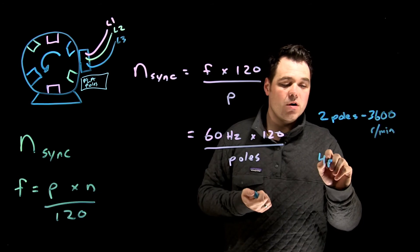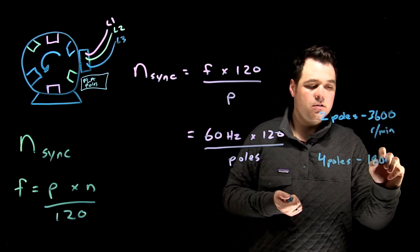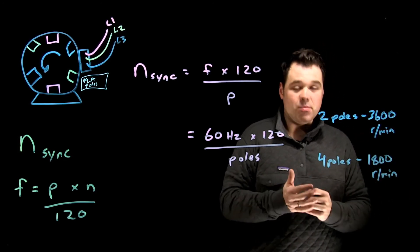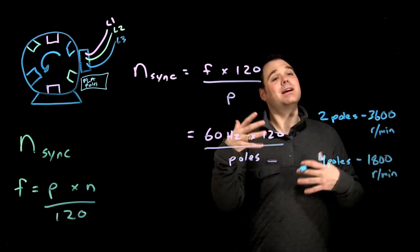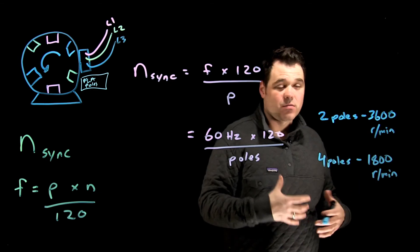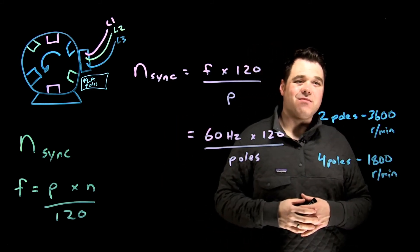A four pole motor, which is pretty common, would give us 1800 revolutions per minute. A six pole motor would be 1200, an eight pole motor 900, a 10 pole motor 720, a 12 pole motor 600. So it keeps going down like that, but the whole time I'm just using that formula there.